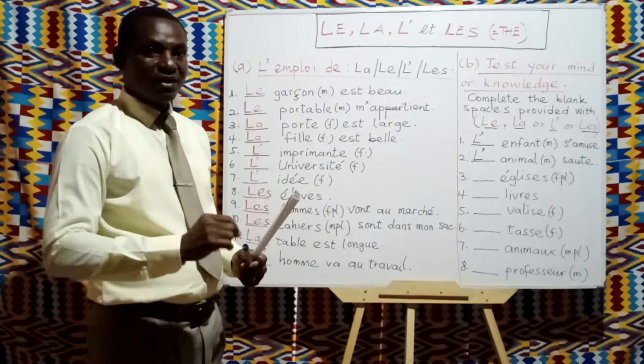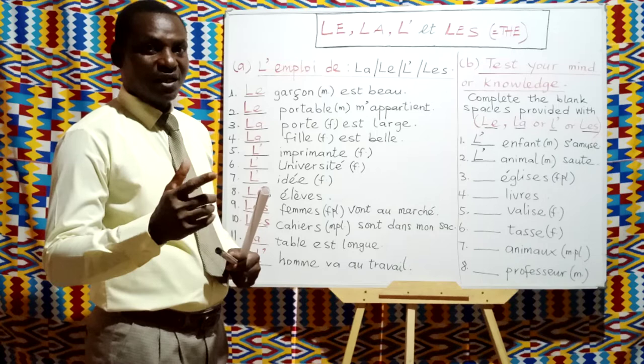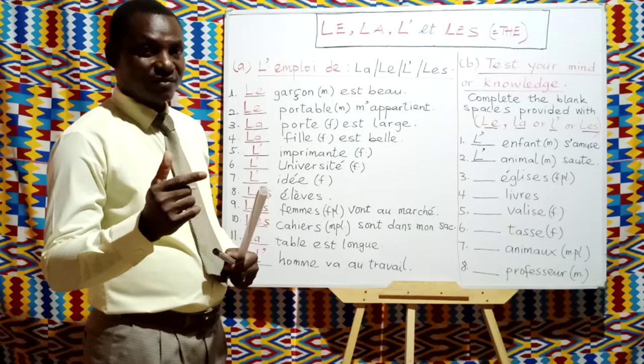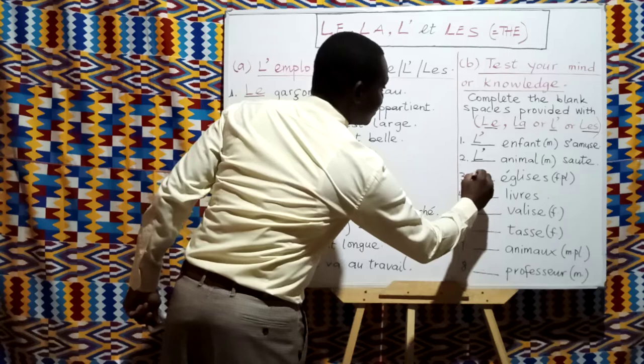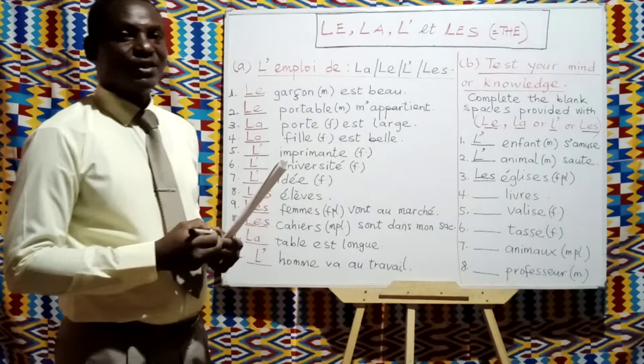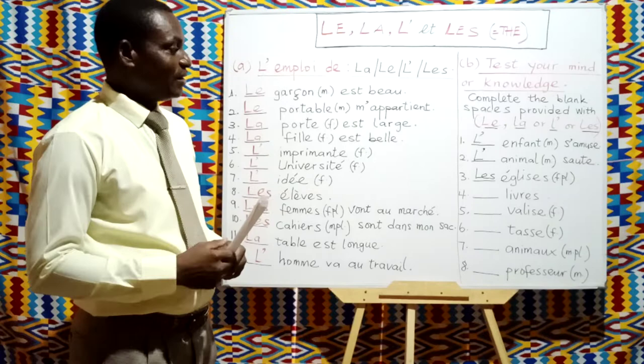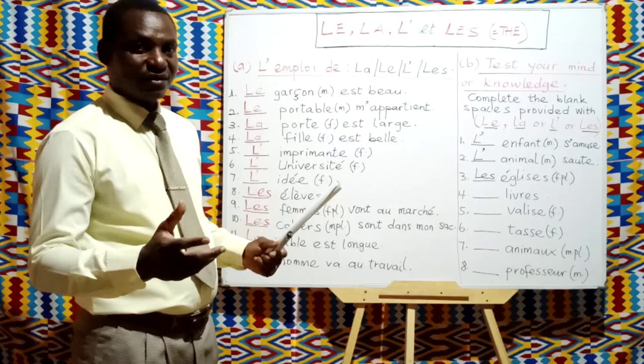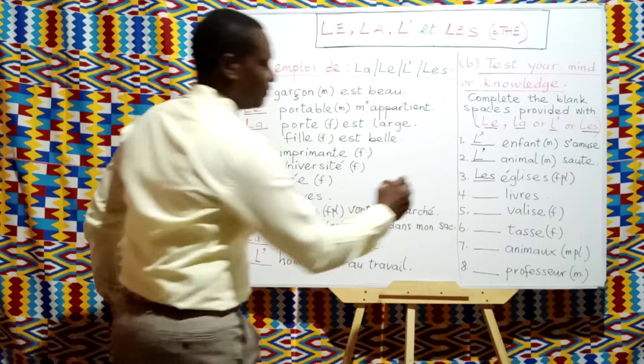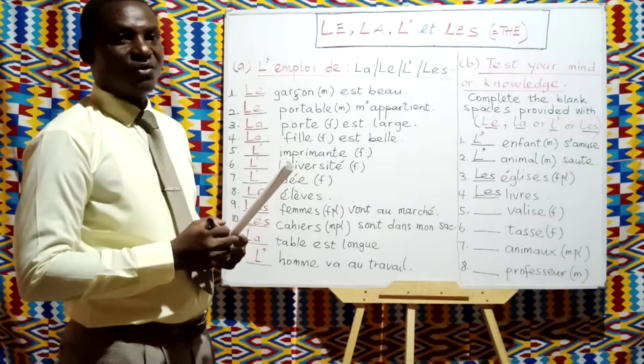Number three: blank église. The answer is Les églises — churches — because église here is plural. Number four: blank livre. The answer is Le livre — the textbook — because livre is masculine singular.